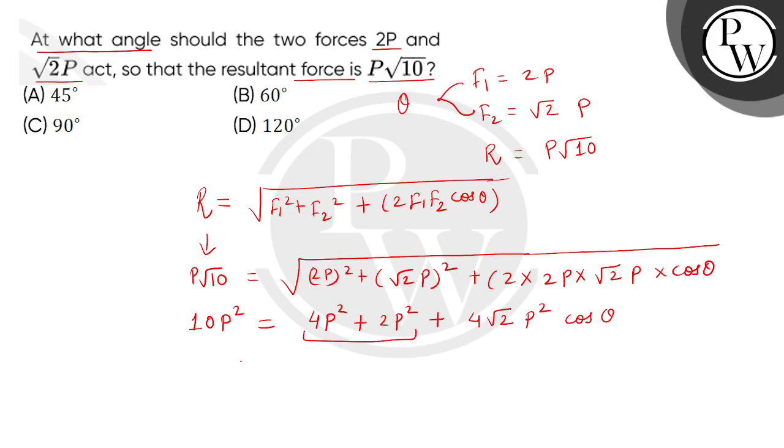We transpose this to the left, then we get 10P square minus 6P square means 4P square, this is equal to 4 square root of 2P square cos theta.